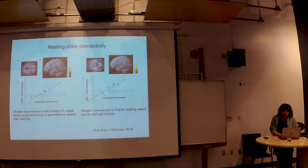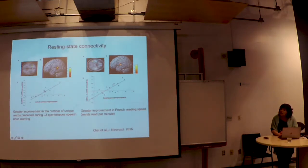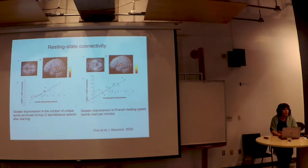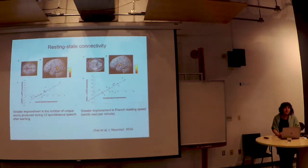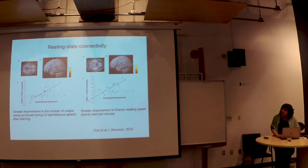Those with stronger connectivity between the visual word form area and a different region of the left superior temporal gyrus showed greater reading speed. Importantly, these were not the same individuals who improved on the vocabulary task — suggesting different individual connectivity patterns. This is an important lesson for education: not all brains are wired the same way, and there might be different teaching strategies optimized for different types of learners whose brains are preferentially wired for one aspect of language over another.